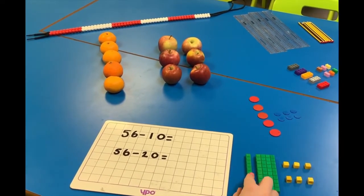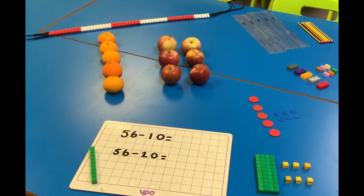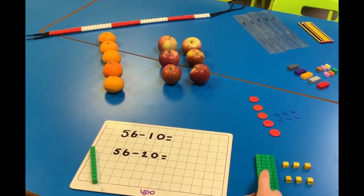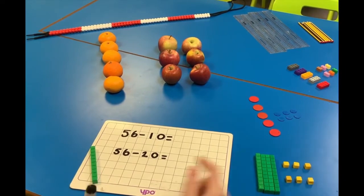To subtract ten I will take my ten stick and I will move it away from the rest of my answer. I will then recount. I have ten, twenty, thirty, forty, forty-one, forty-two, forty-three, forty-four, forty-five and forty-six.